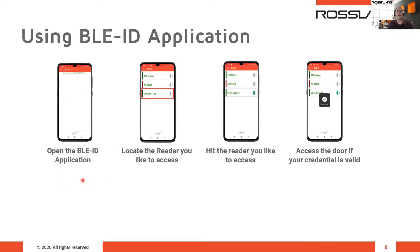When you open the BLE ID application, the application will start looking for available devices within the range set. Once devices are found, you can locate the reader you would like to access. Press the reader from the list — you can see the background will turn gray, and once the ID is transmitted, you will get approval and can access the door if your credential is valid. On the devices, you will see two color segments: green for CSN Smart and UHF Smart Readers, and red for Bionic 9000 terminals.